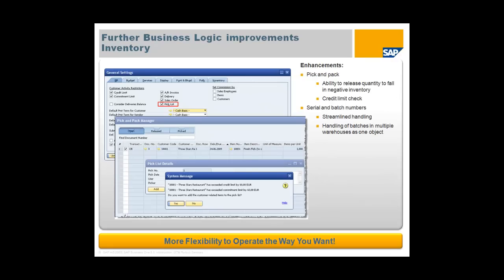We've also done further enhancements to the pick and pack functionality — including the ability during pick and pack to allow quantity to fall into negative inventory if required, and incorporating credit limit checks during the pick and pack process. We've streamlined the handling of serial and batch numbers, and done enhancements to allow handling of batches across multiple warehouses as one object — delivering more flexibility to operate the way you want.